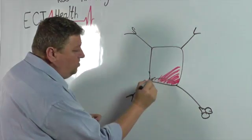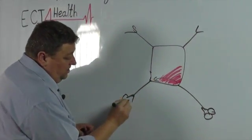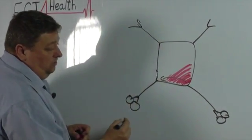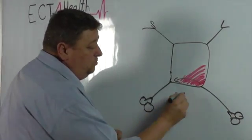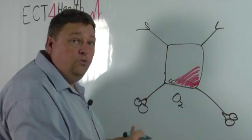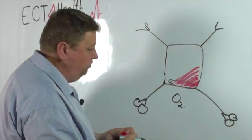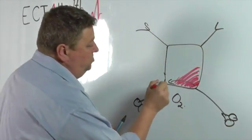This switches on the second receptor site, which binds with oxygen. And we draw oxygen as two little circles because oxygen is O2. It's a diatomic molecule, meaning two molecules of oxygen joined together.